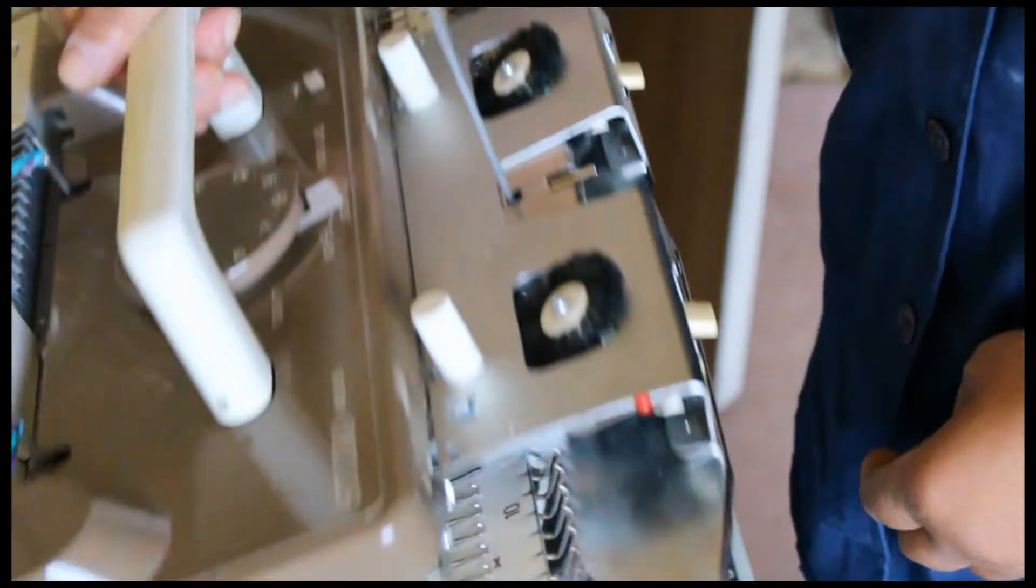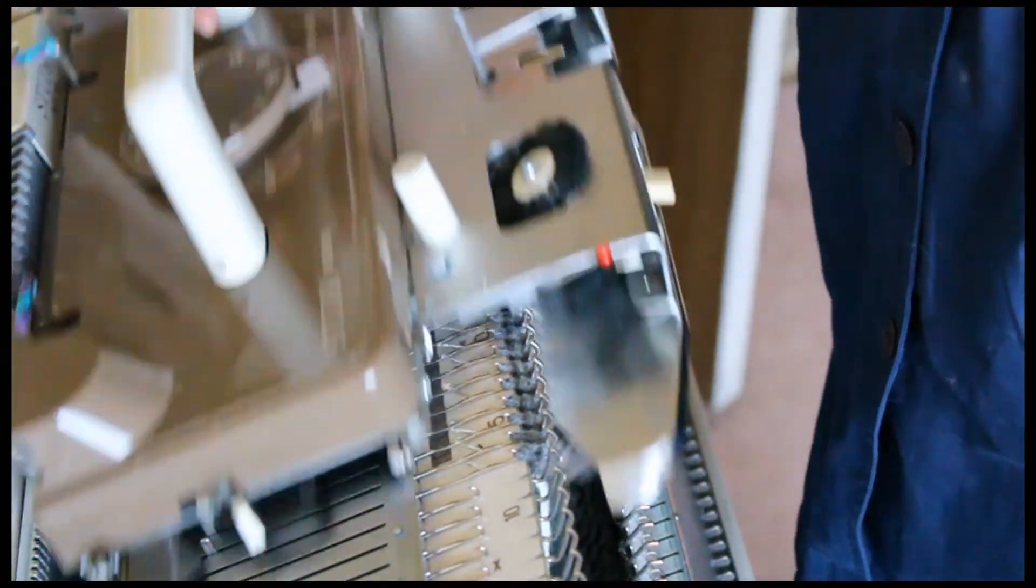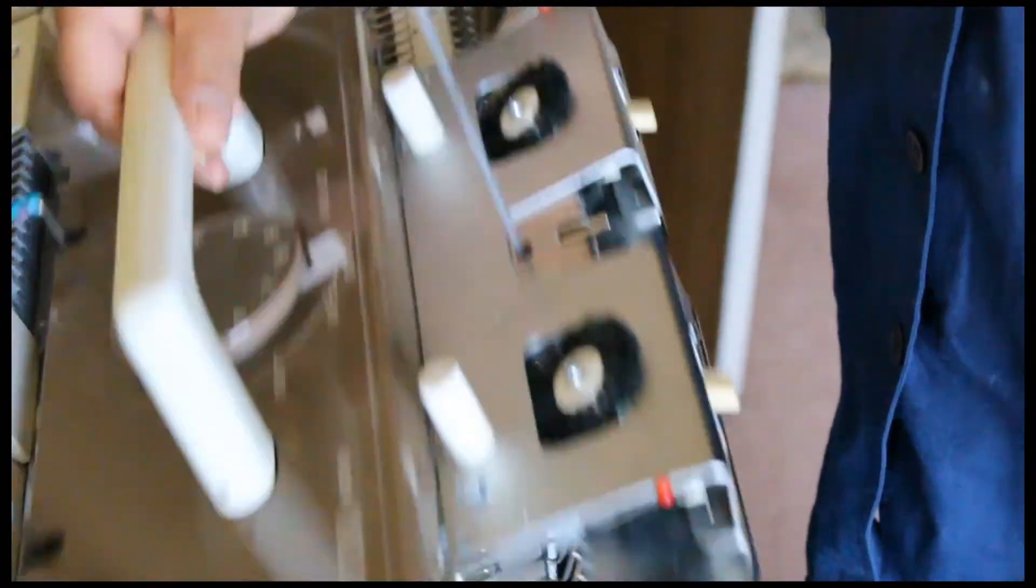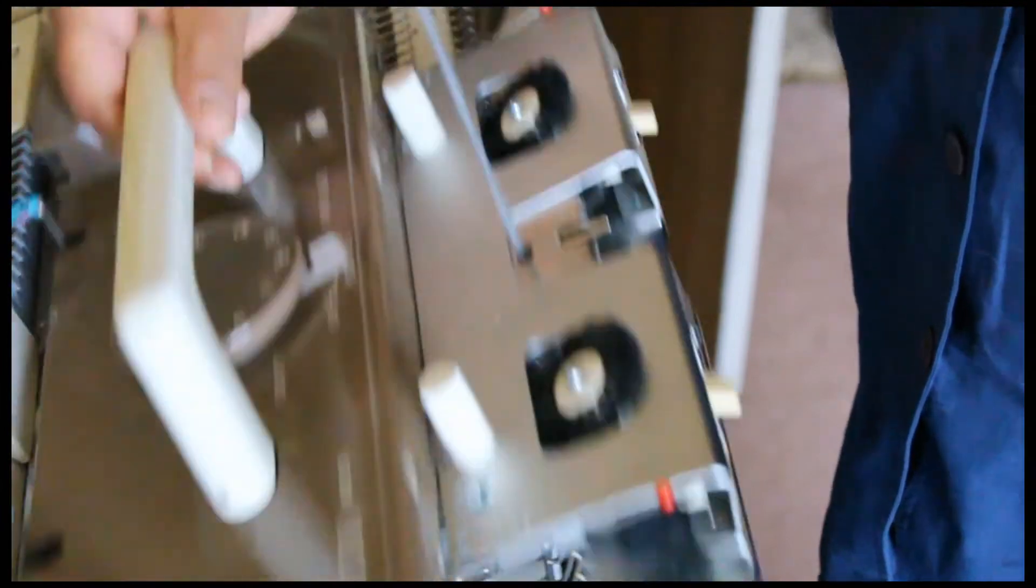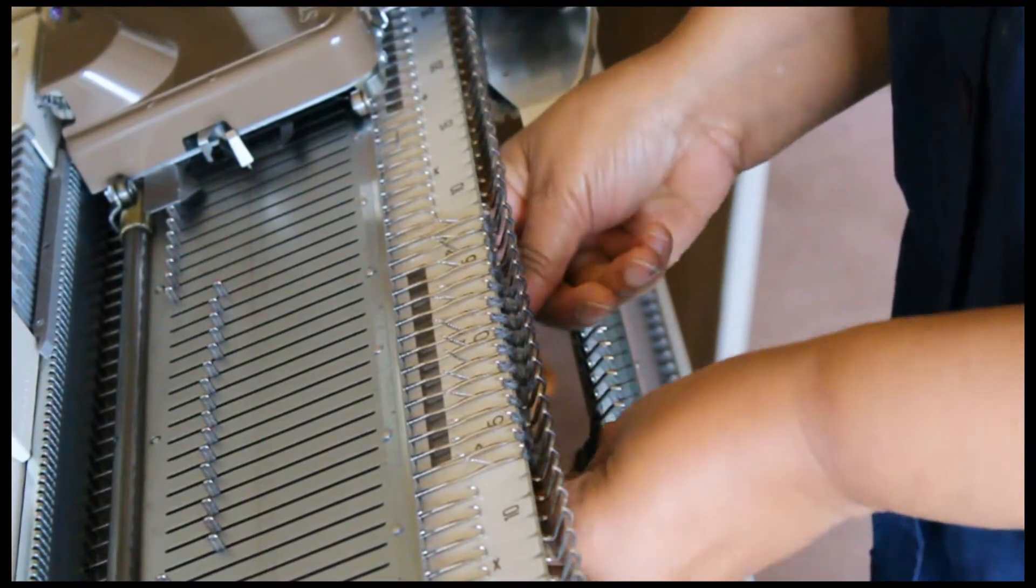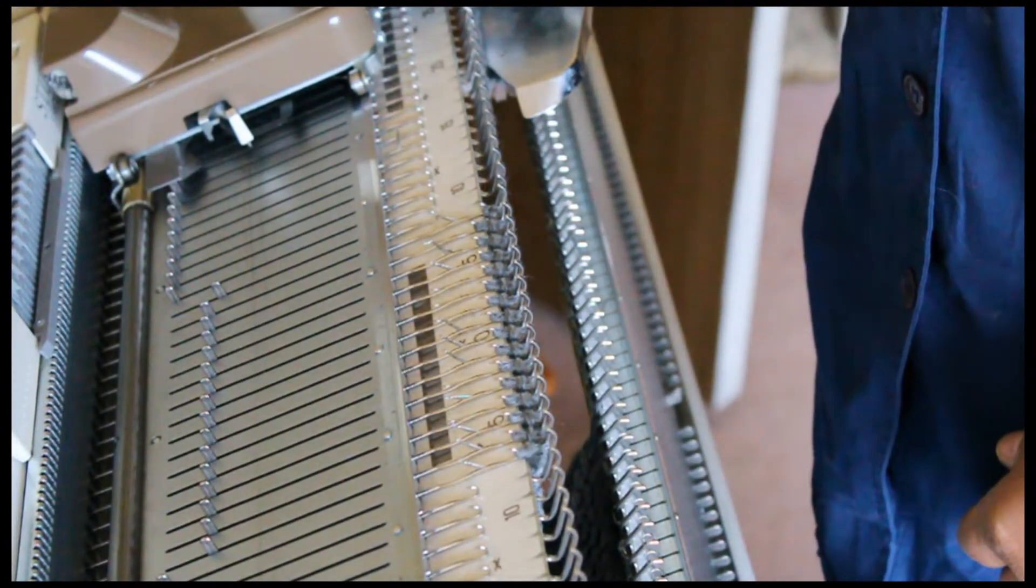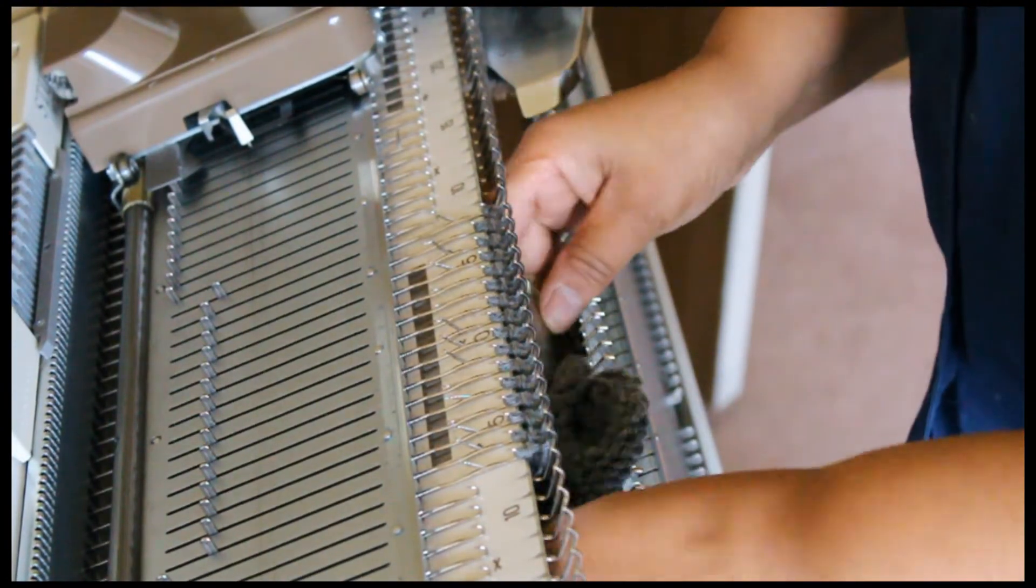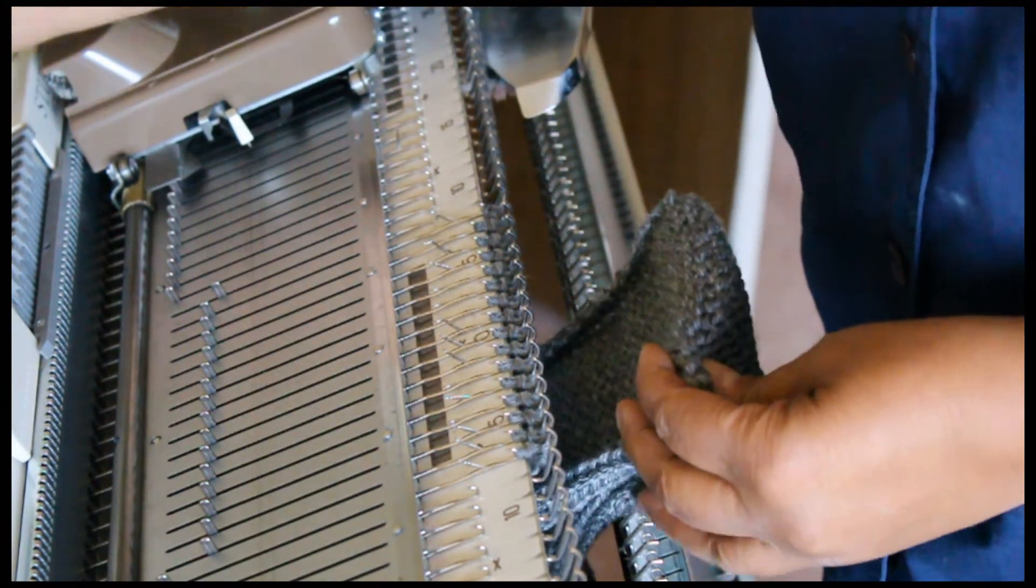We're going to knit 16 rows. Okay. Remove the claw weights.